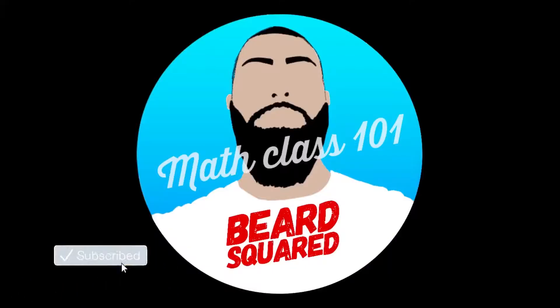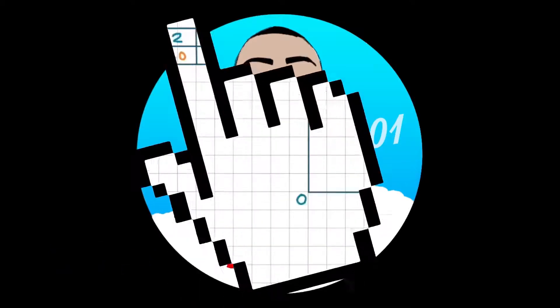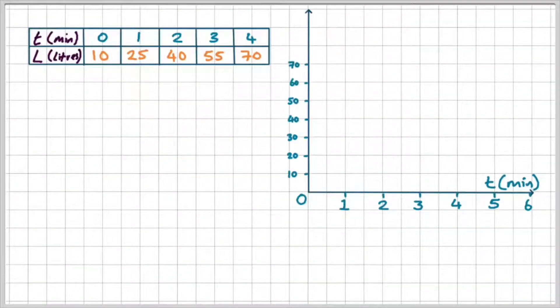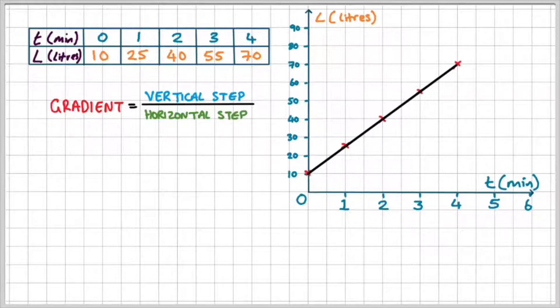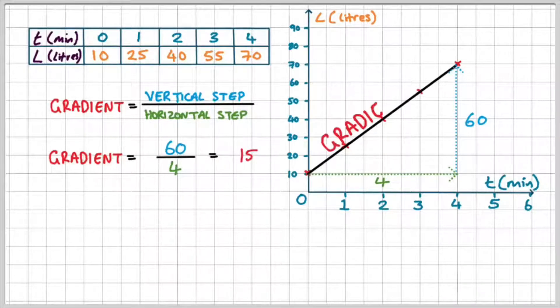So let's have a look at the example that I showed you earlier on. I've got a table of values and a graph with the straight line on it. Now to work out the gradient, I'm going to do the vertical step divided by the horizontal step. You can see that here, I've got a vertical step of 60 and a horizontal step of 4. So that means I've got a gradient of 15.